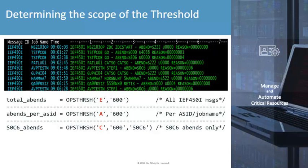Upon the first firing of the rule triggered by the first ABEND at approximately 9 o'clock, the function would have returned a value of 1, while a value of 9 would have been returned when the last IEF450I event at the 9:06:28 time frame was issued, since there were a total of 9 ABANDs up to that point in a 10 minute window. The counter would be reset upon an event being processed after the 10 minute interval from the first occurrence. So if the next ABEND message was issued at 9:15, the counter would be reset to 1, since it has been more than 10 minutes since the threshold was set upon the first issuing of the event at 9 o'clock.